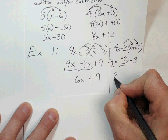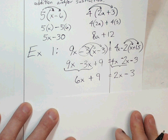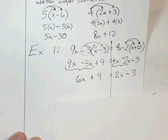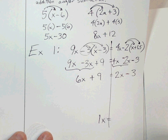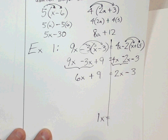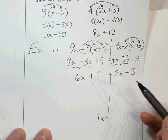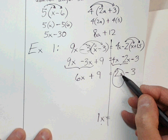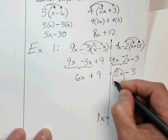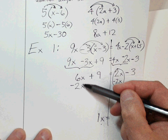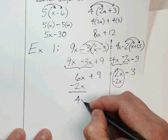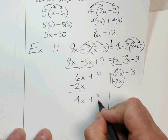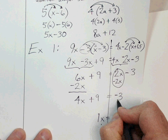Now step three: make zeros and ones. We want the x's on one side, so I'll zero out the 2x on the right by subtracting 2x from both sides. On the left, 6x minus 2x gives 4x, and the plus 9 comes down. On the right, 2x minus 2x is zero, leaving just negative 3.